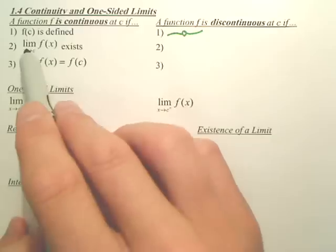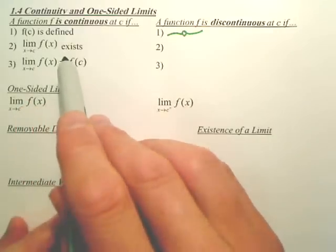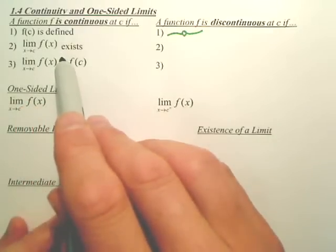The second stipulation. The limit as X approaches C of f of X exists, meaning the limit exists. For it to be continuous, the limit should exist.